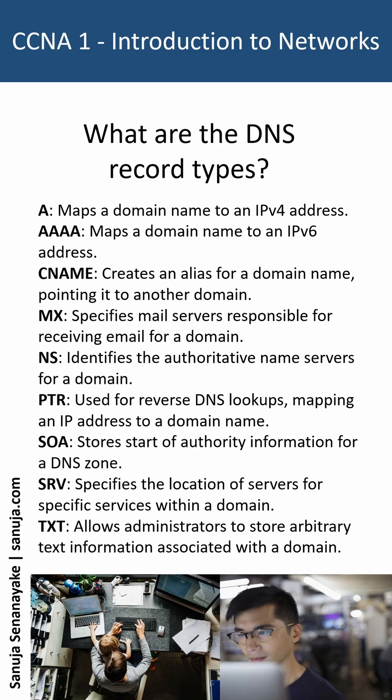PTR record is used for reverse DNS lookups, mapping an IP address to a domain name. SOA record stores start of authority information for a DNS zone. SRV record specifies the location of servers for specific services within a domain. TXT record allows administrators to store arbitrary text information associated with a domain.